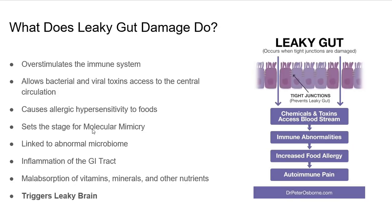Some of these molecules look like your body tissues. For example, there are certain bacterial toxins called lipopolysaccharides, or LPS for short. It's been found that some LPS actually mimic people's thyroids or mimic people's muscle tissue. So it sets the stage for molecular mimicry. When these toxins are leaking through, the immune system attacks the toxins at first, but over time the immune attack turns to our own tissue, setting the stage for molecular mimicry, which causes autoimmune disease.